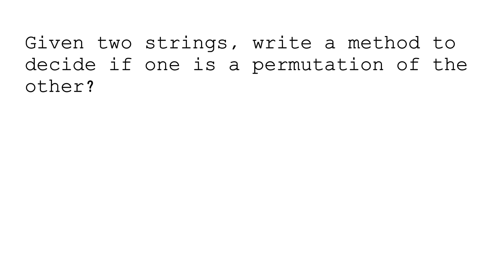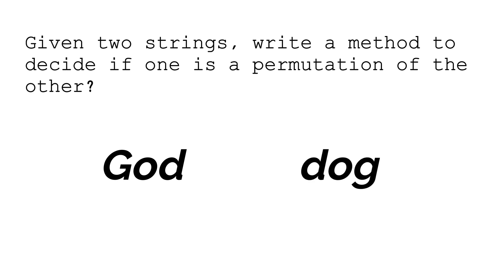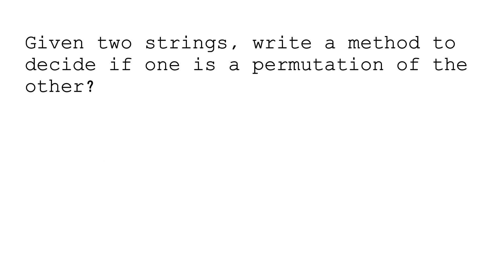For example, if we have the word 'God' where G is capital, and we have another string 'dog' where all the characters are lowercase, then in that scenario they will not be considered as permutations of each other, because capital G is considered a unique character. That's the first thing to clarify from your interviewer.